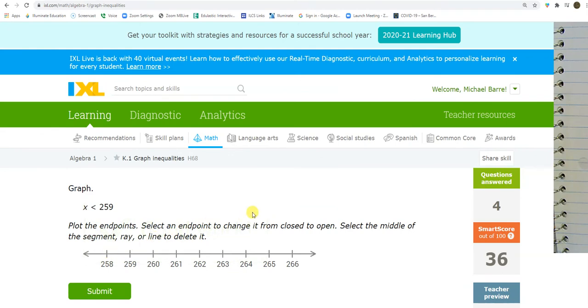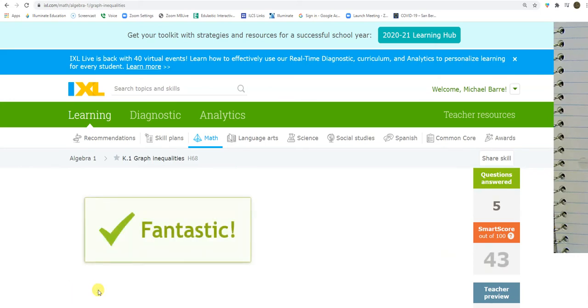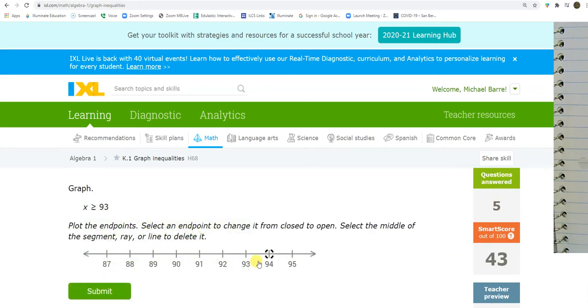Open circle at 259. 259. Closed. No, open circle. Open circle. I want the numbers that are less than that. Greater than 93. 93. Closed circle. Greater than.